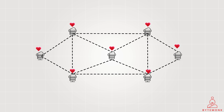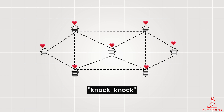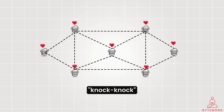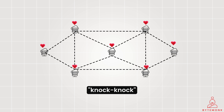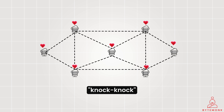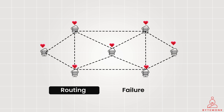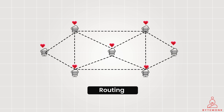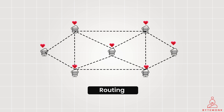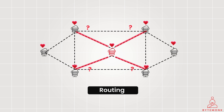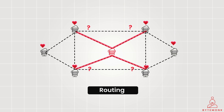Servers employ a communication strategy known as a knock-knock system to streamline their interactions. Every now and then, servers give a little knock-knock to their neighbors, letting them know they are still awake and ready to work. This quick check-in helps with two big things: routing and failure detection. When a new task arises, a server needs to identify the most suitable teammate to handle it, and servers can consult the collective heartbeat data to determine the appropriate destination for incoming requests.